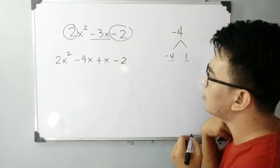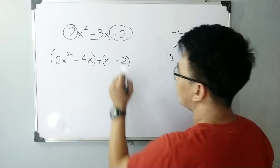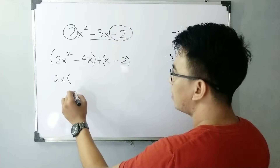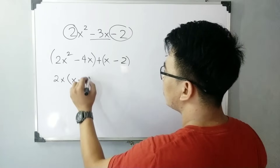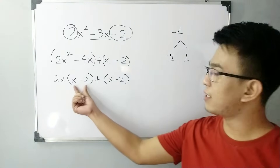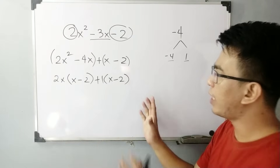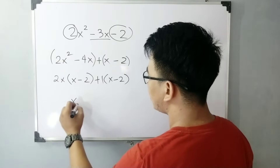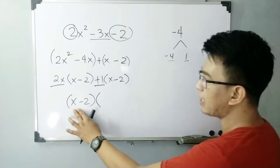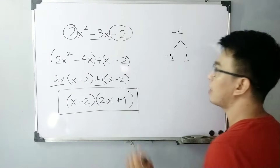So what we will do here is we will apply factoring by grouping. We will regroup them. Dito, meron tayong common which is 2x, so we have 2x times x minus 2. And dito, meron tayong plus x minus 2. So papansin nyo — parehas, di ba? Parehas. Tapos meron tayo dito yung invisible one. Since parehas yung x minus 2, we can factor it out and it will become x minus 2 times what will remain is 2x plus 1. So the factors are x minus 2 times 2x plus 1. Ito na yung mismo sagot natin for the fourth example.